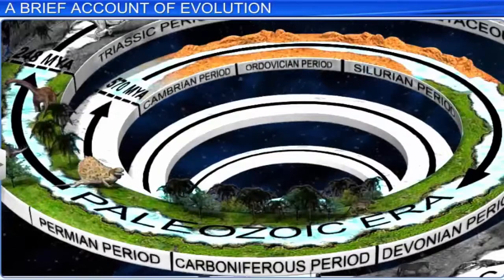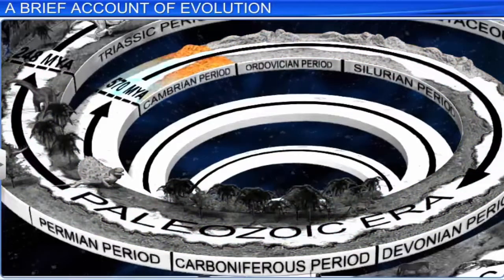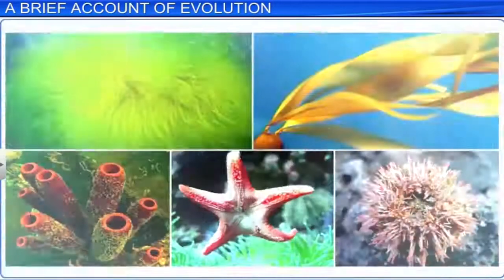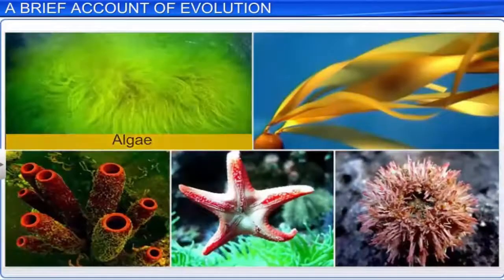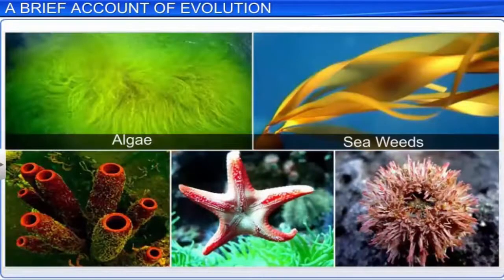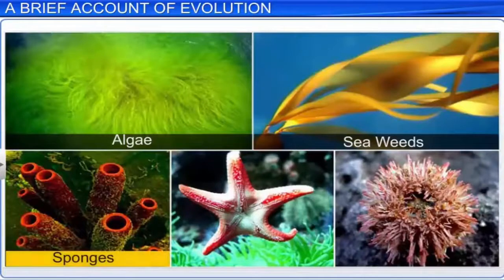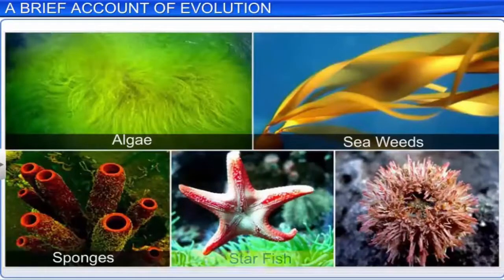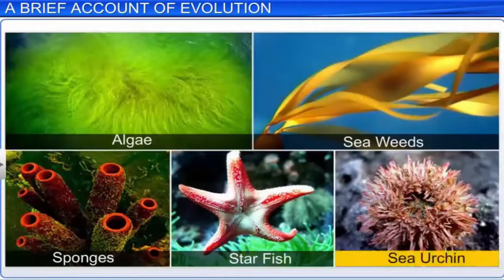In the Cambrian period, plant life consisted of primitive algae and seaweeds, while animal life consisted of invertebrates such as sponges, starfish, and sea urchins.